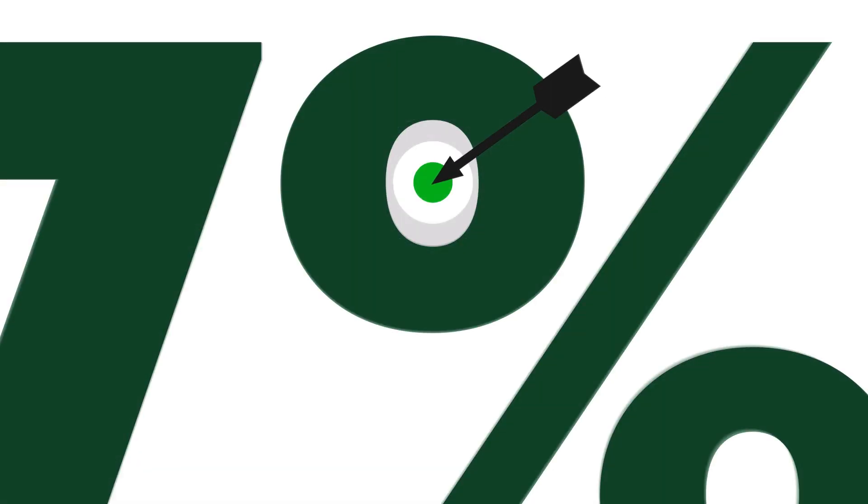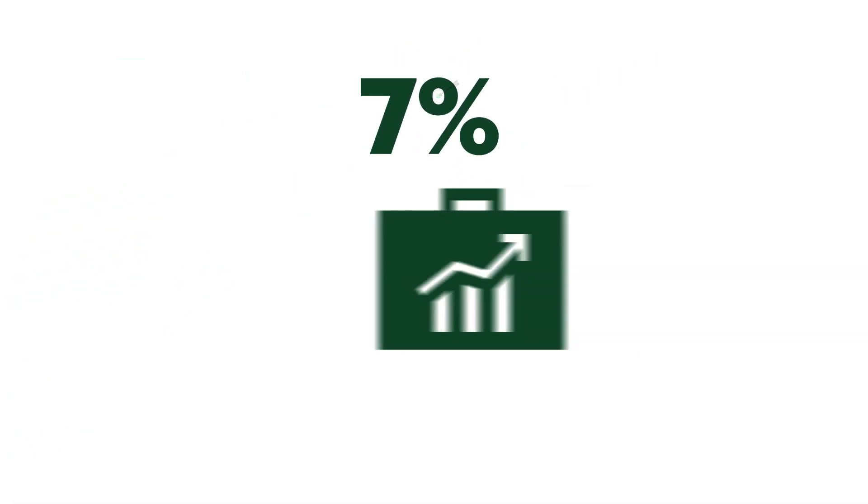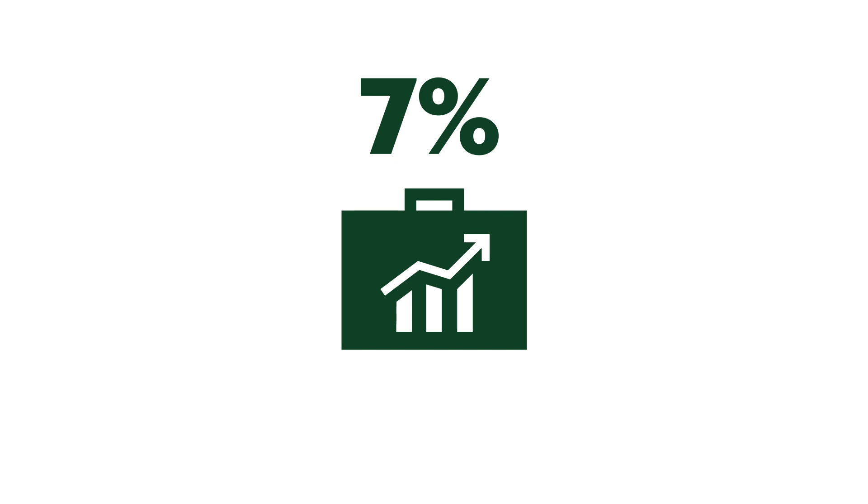Some investors opt for the strategic model. Based on the historical returns of different asset classes, they'll target a certain return they want to achieve on balance and buy an investment mix expected to deliver it. For example, let's say an investor is targeting a seven percent annual return on their portfolio.